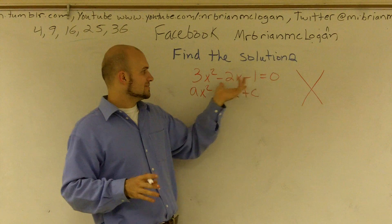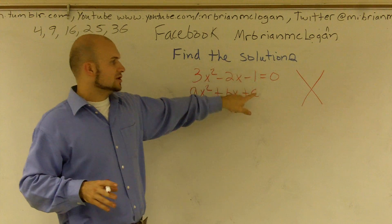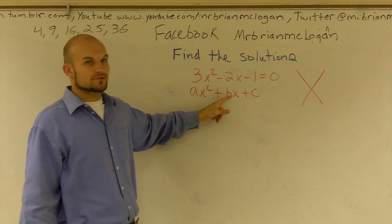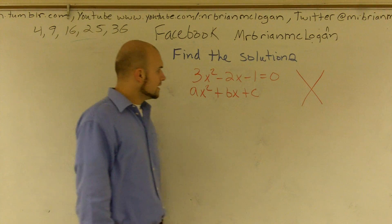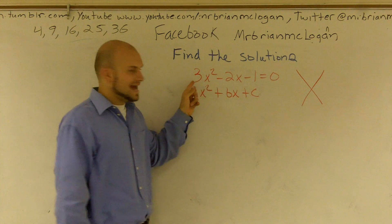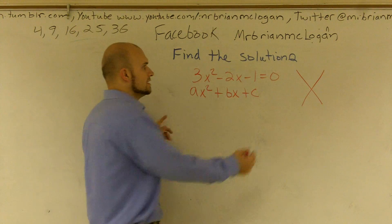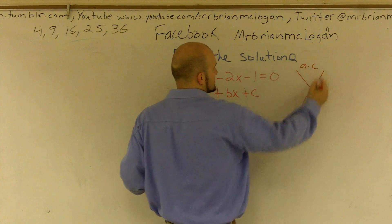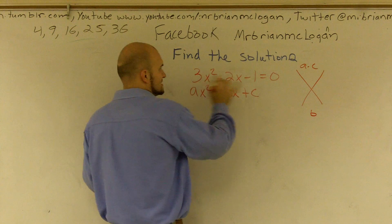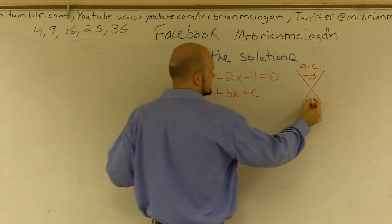Usually when you did have a number in front — the a value — you said what two numbers multiplied to give you c but add to give you b, right? Well, when you have an a which is a value greater than 1, you actually multiply your a times your c and then find b. So a times c would be negative 3 and my b is negative 2.